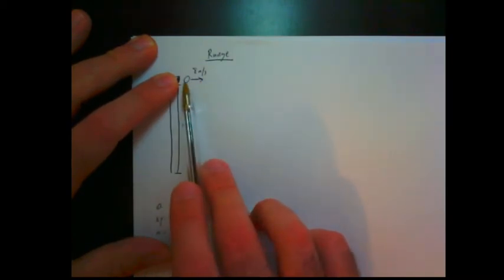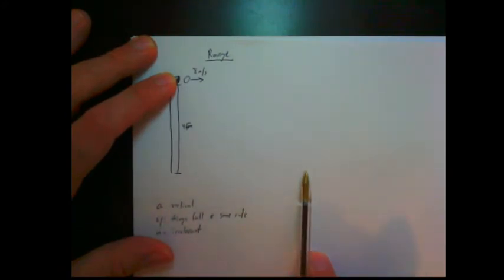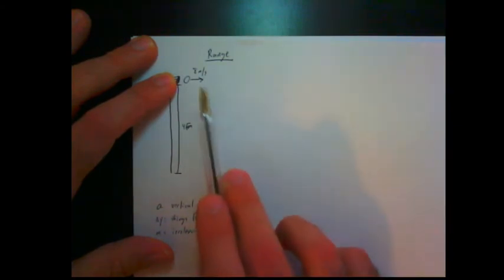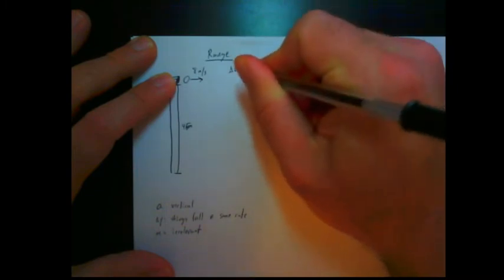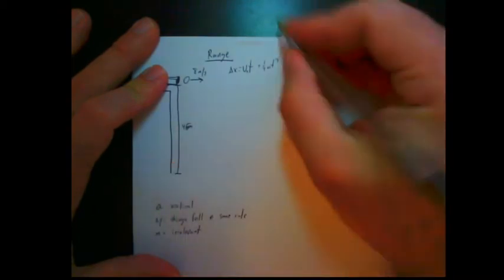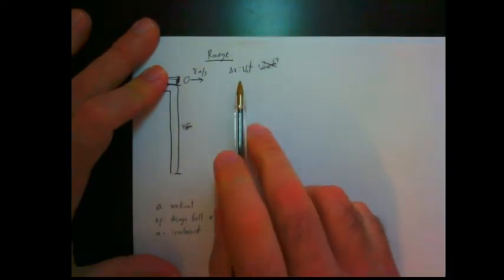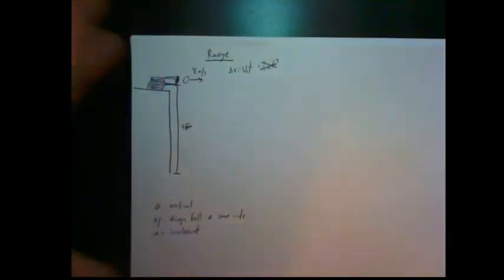What we know is the cannonball will move at a constant horizontal rate. It will be moving at 8 meters a second horizontally the whole time until it reaches the ground. That means that all we have to do, we have a constant horizontal velocity, to figure out the range is take our velocity and multiply by time. Because there is no horizontal acceleration, all this goes away and we're just left with delta x equals velocity times time.